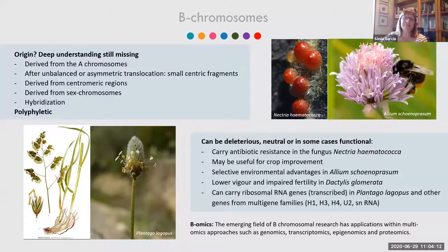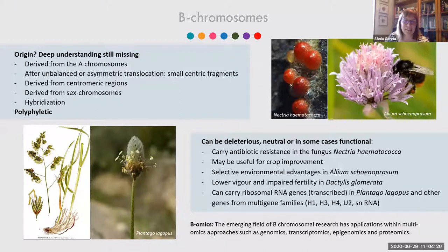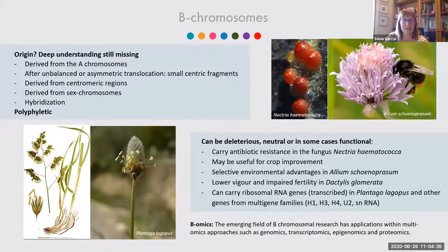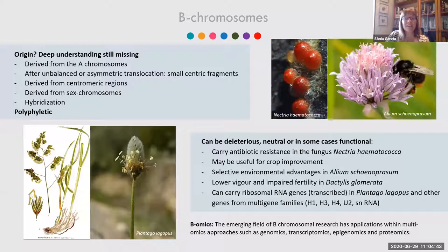What is the origin of B chromosomes? Probably there are several origins — this is polyphyletic. B chromosomes are found in animal, plant, and fungi kingdoms. The most plausible explanation is that they are derived from A chromosomes, possibly after unbalanced asymmetric translocation from small centric fragments. They can be derived from centromeric regions, from sex chromosomes, or can be a byproduct of hybridization processes.